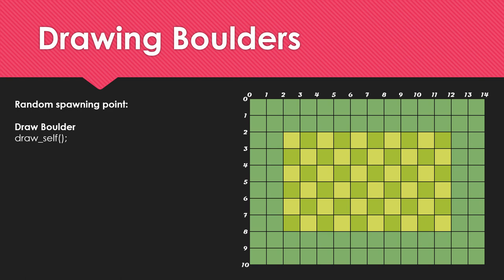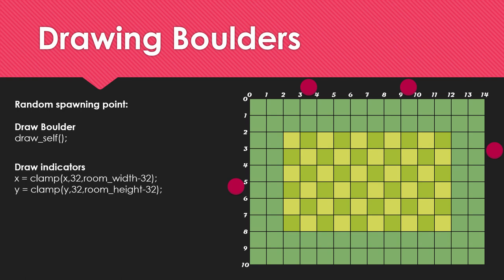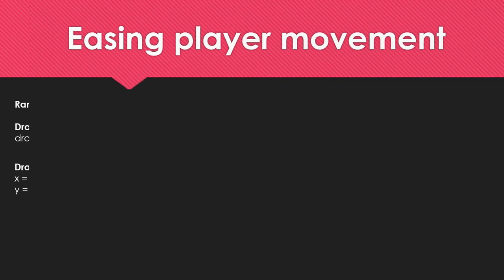We're going to draw the boulders using the draw cell function. So let's say I have boulders here, here, here, and here before they actually go into the screen. What I'll be doing is drawing indicators and clamping them to the room size — basically clamping them into the dashed area so the indicators are shown. Very simple and straightforward.